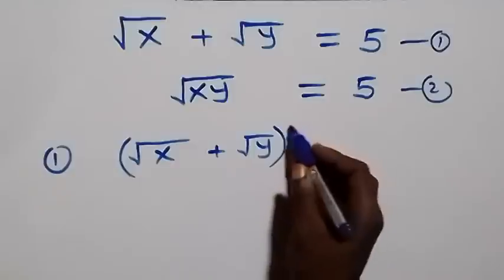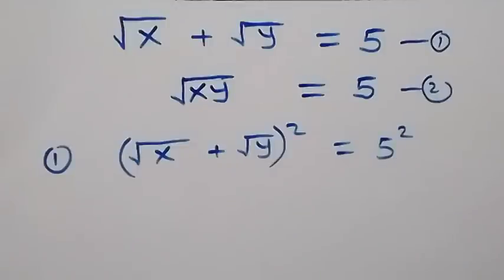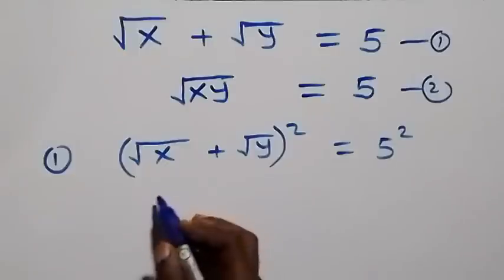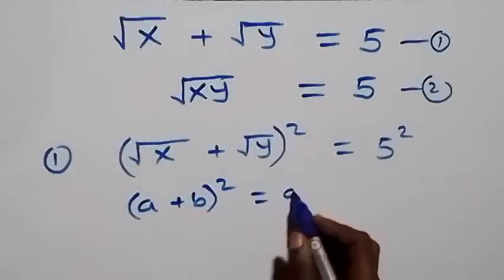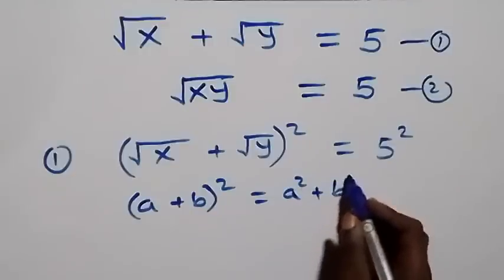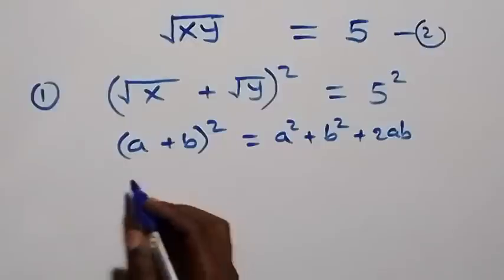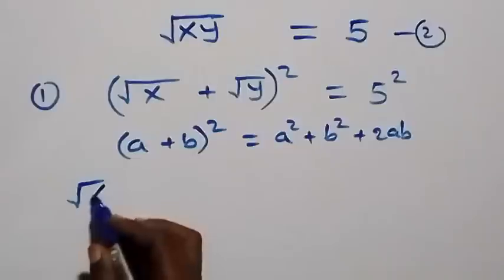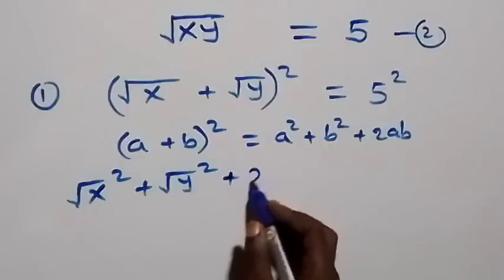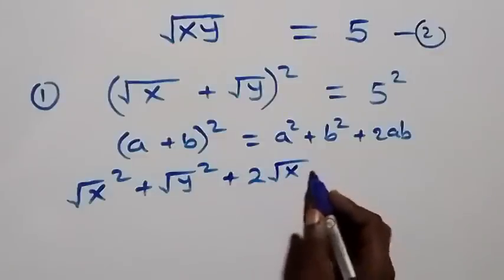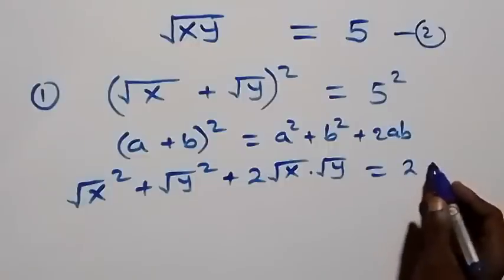That is, we have (√x + √y)² = 5². The expansion follows from (a + b)² = a² + b² + 2ab. That is, we have (√x)² + (√y)² + 2·√x·√y = 5², which is 25.